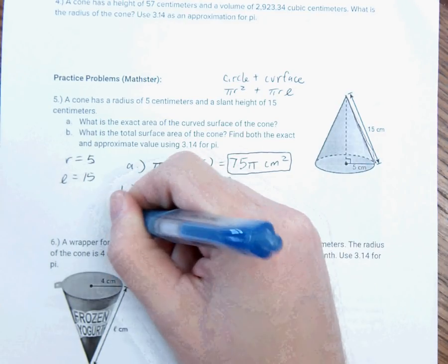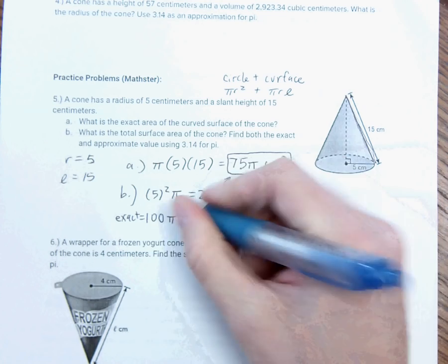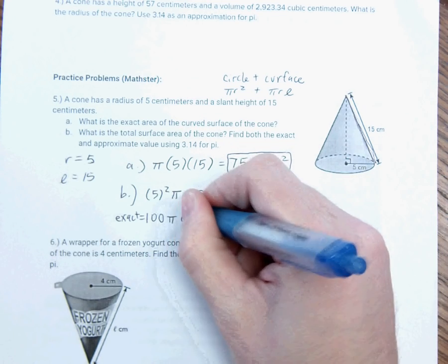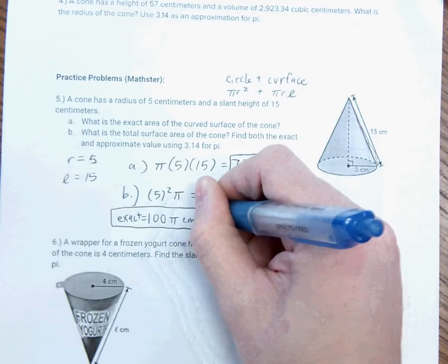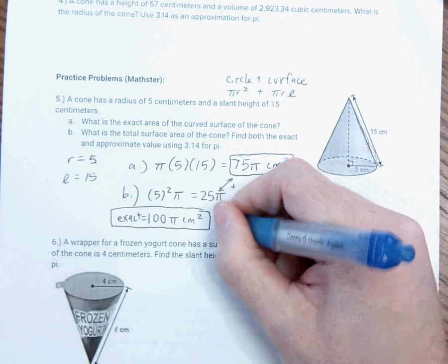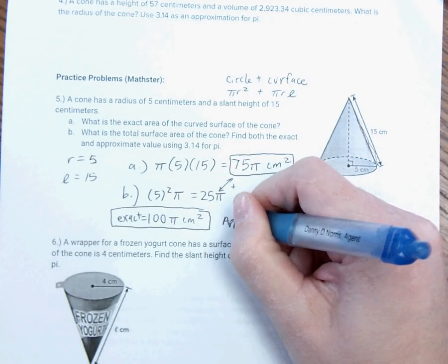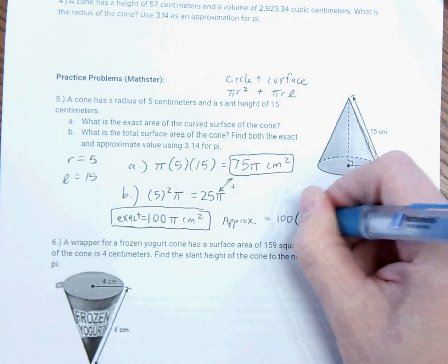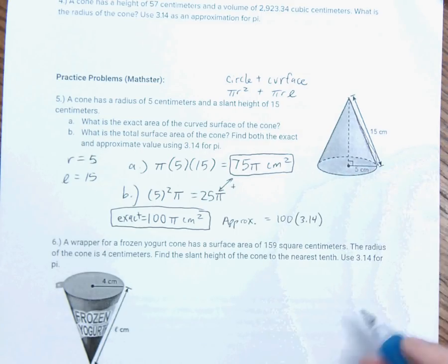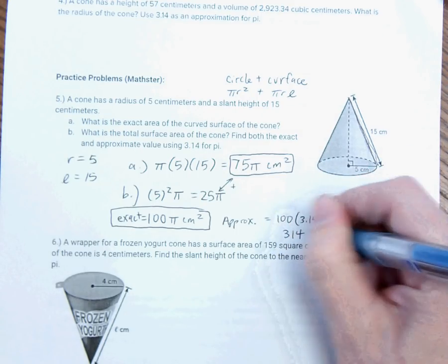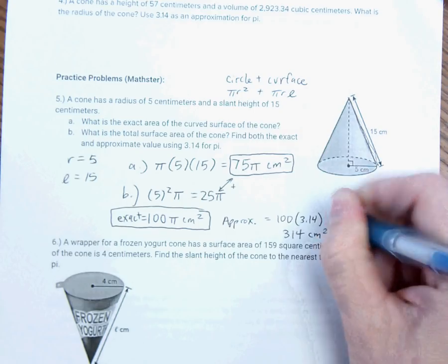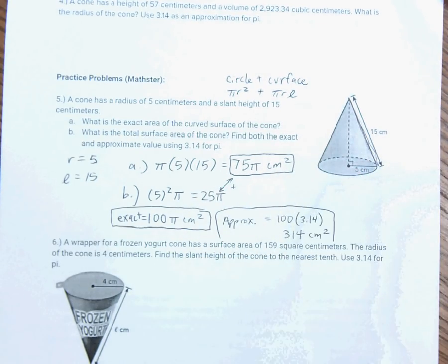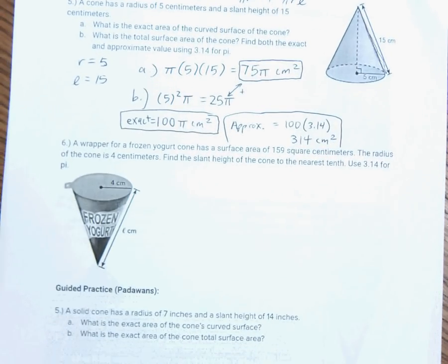And I get 25 plus 75 pi, which is 100 pi. So, that is my exact 100 pi centimeters squared. And my approximate is equal to 100 times 3.14, which is 314 centimeters squared. Let that soak in.